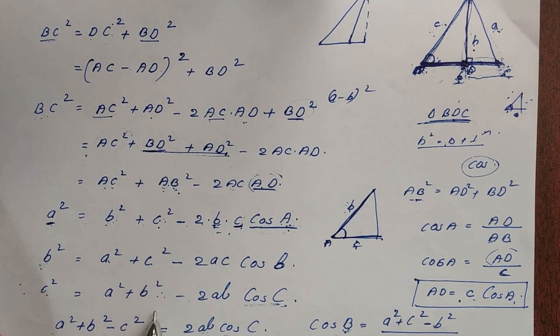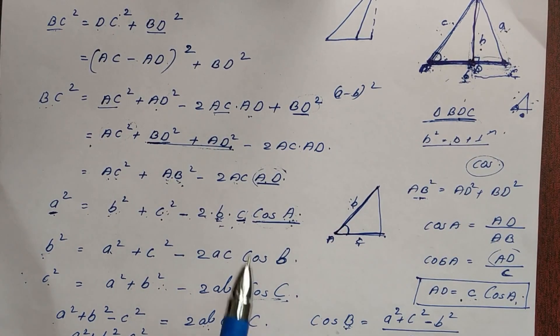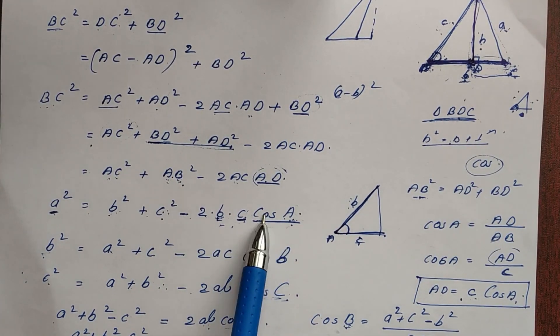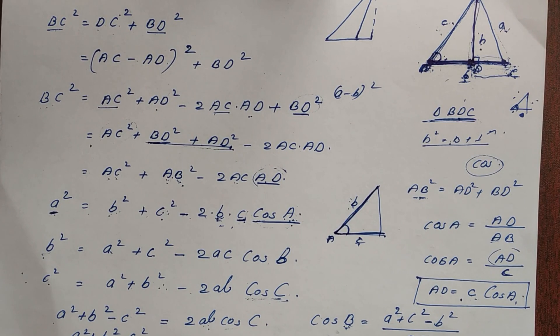So that is how we get the cosine formula: a² = b² + c² − 2bc·cosA. That is the complete derivation.